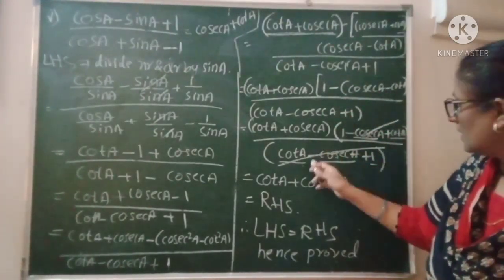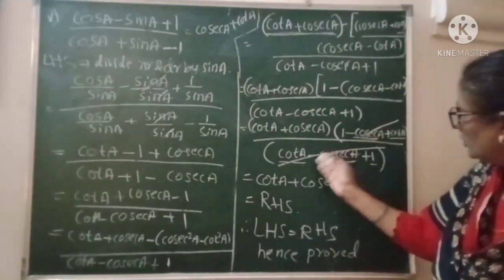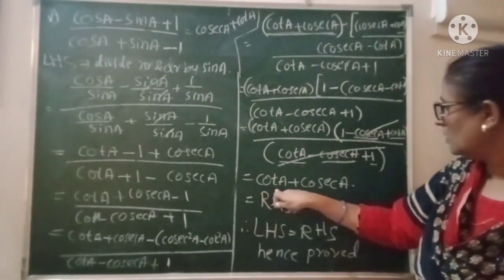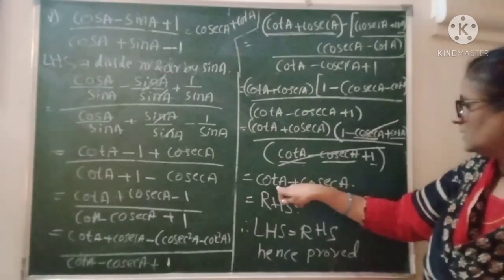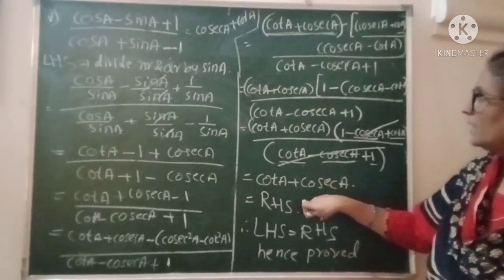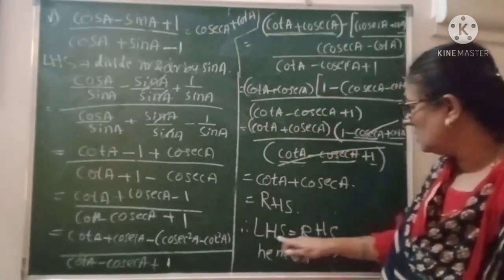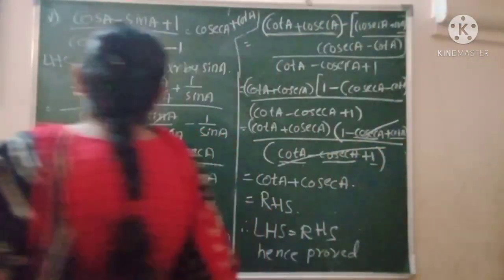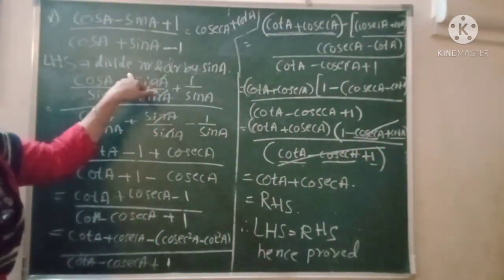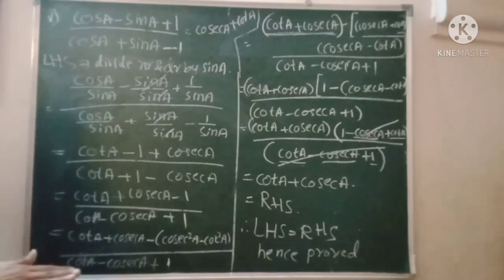If you compare the terms, they are the same, so you remain with only cot A plus cosec A. So that is your RHS. Practice more problems like this.